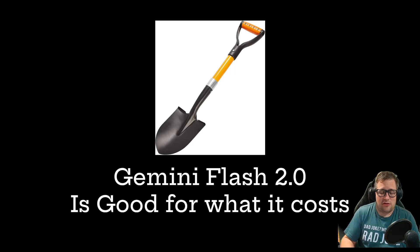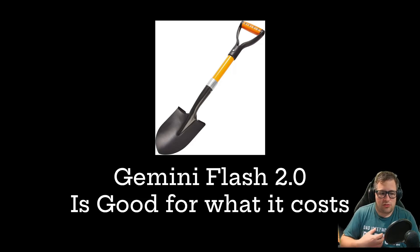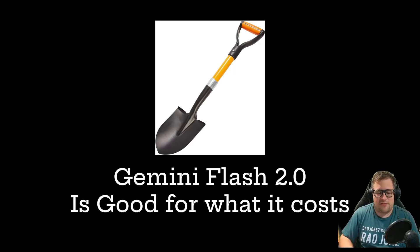My bottom line is Gemini Flash 2.0 is good value — very good for what it costs. I'd go as far as to say it's probably one of the best models for value that I've tested so far. I think we as engineers are going to have to get smart about how we're using our coding team. We're going to be much more product engineers, and I'm going to have my Gemini Flash 2.0 worker, my Claude worker, my OpenAI worker. Models are good at certain things, and we need to do that in our coding as well.